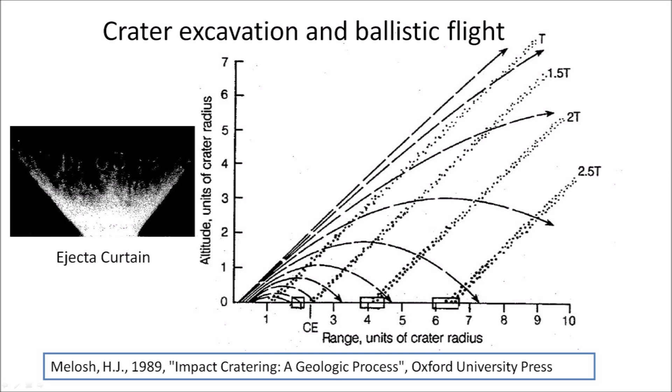When the crater is excavated, the innermost ejecta are launched first and travel fastest, following the steepest trajectories. Ejecta originating farther from the center are launched later and move more slowly, falling nearer the crater rim. The debris from an impact forms an ejecta curtain in the shape of an inverted cone that sweeps outward across the target.